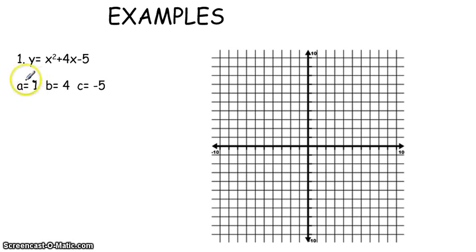Here are some examples on how to graph a quadratic equation. First you have to find the a variable, which is the x squared, so it would be 1. Then you have to find the b variable, which is the 4x, so it's just 4. And then the c variable is the negative 5, so it's negative 5.